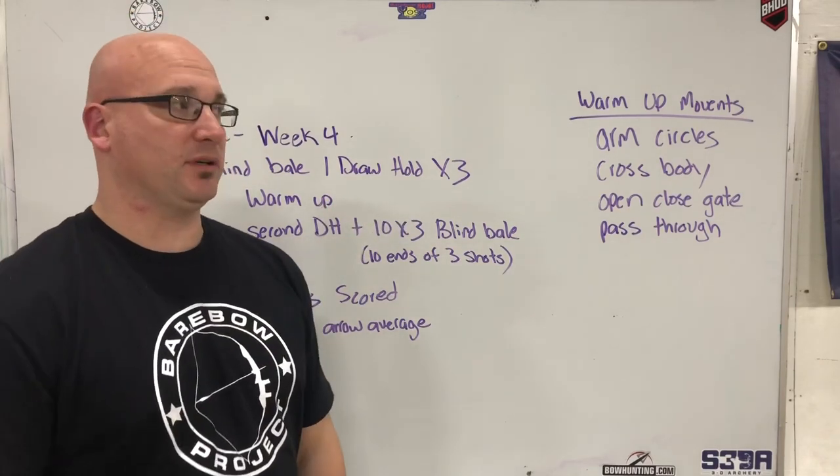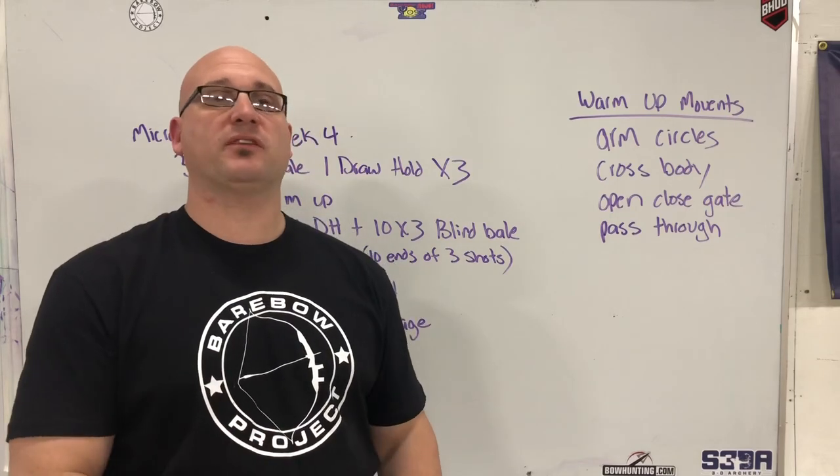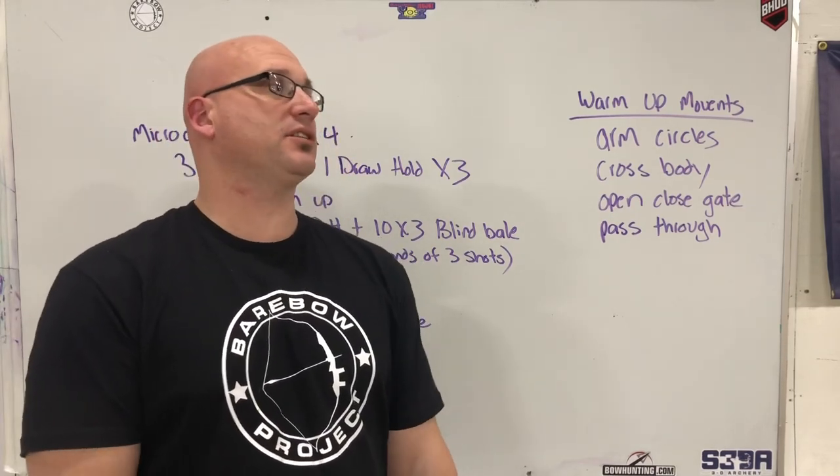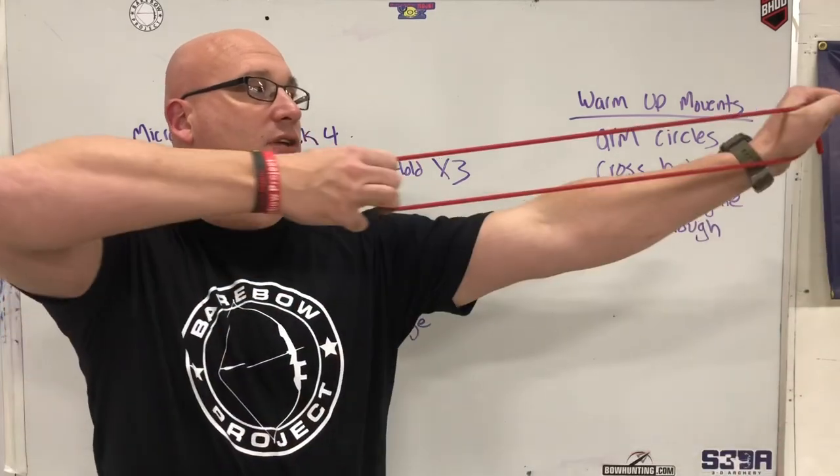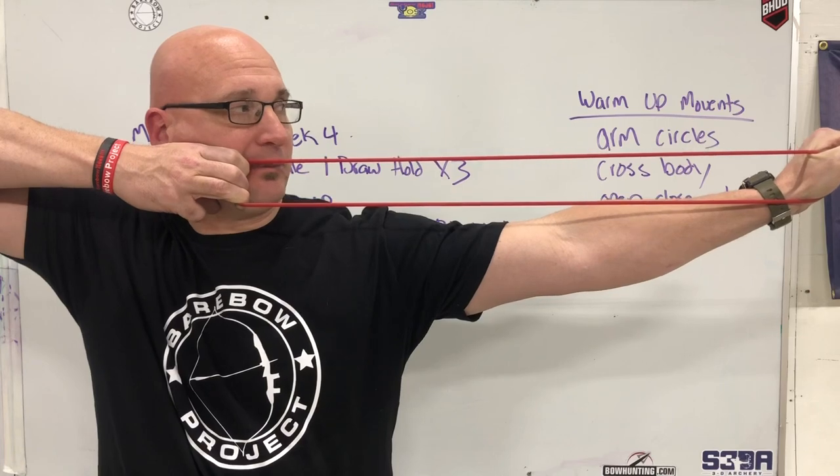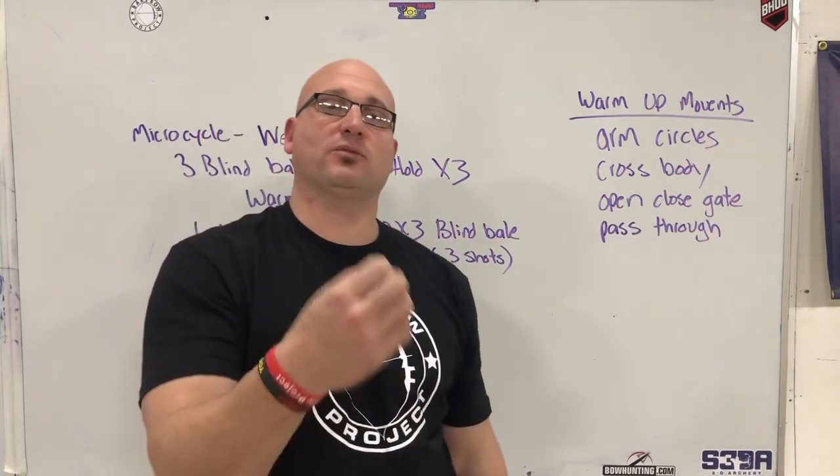So the draw hold is very important, typically 20 yards on your 40 centimeter or 50 meter face. And a draw hold is, just like blind bail, where you run your entire process. But when you get back and you hit your anchor point, you just stabilize. You make sure your alignment is correct and you stabilize, but you relax at the same time.